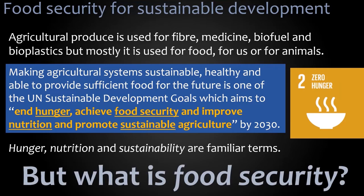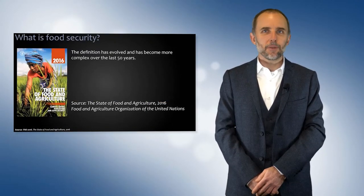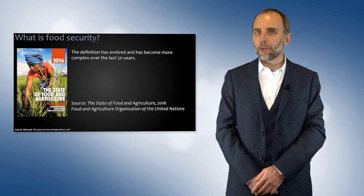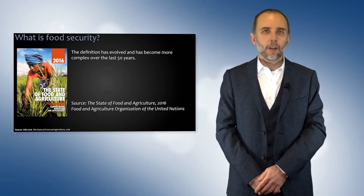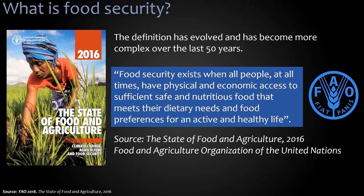Hunger, nutrition, and sustainability are terms that we are familiar with. But what is food security? The definition of food security has evolved and has become more complex over the last 50 years. The Food and Agriculture Organization of the United Nations defines food security as existing when all people, at all times, have physical and economic access to sufficient, safe, and nutritious food — and that food must meet their dietary needs and preferences for them to have an active and healthy life.